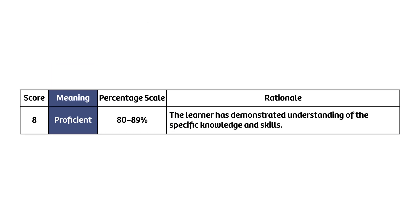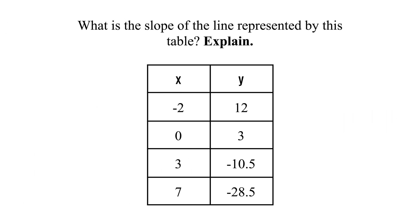Let's start with proficient level questions. The proficient category represents an 8 on the grading scale, the equivalent of an 80 in the gradebook, and our rationale is that the learner has demonstrated understanding of the specific knowledge and skills. Basically, proficient level questions are skill level questions — can the student do the questions we've been working on frequently in class? There aren't any surprises; they're straightforward. Here's an example from a quiz about slope: 'What is the slope represented in this table?' If they do well on three questions in this category, I'm confident they're proficient in their learning.